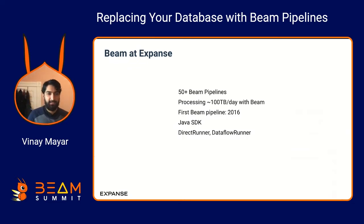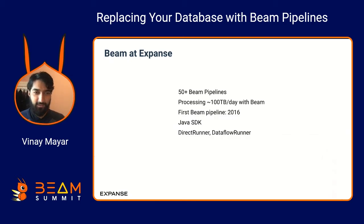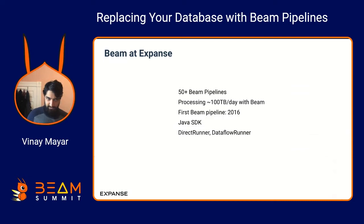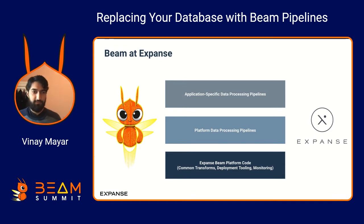Some more detail about how we use Beam at Expanse: we have over 50 Beam pipelines, processing over 100 terabytes a day. Our first Beam pipeline was built in 2016 — though we were actually using Google Dataflow when it was in alpha, before Apache Beam became an Apache project in 2017. We use the Java SDK and mostly the DirectRunner and Dataflow Runner. All of our back-end teams are using Beam, built on top of a platform codebase with lots of common transforms, tooling, and monitoring.